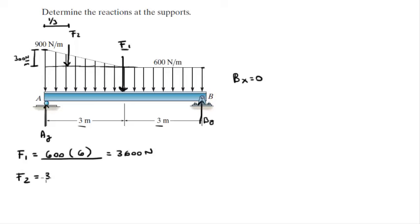So it's 300 times the length of the triangle, which is 3, divided by 2 because it's a triangle, and the area you get it divided by 2. So it's 450 N.